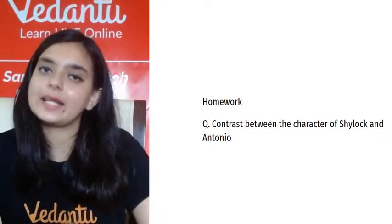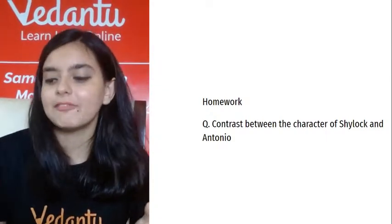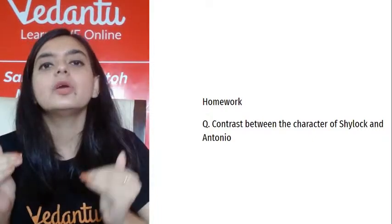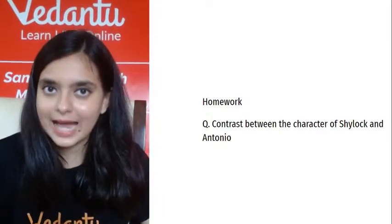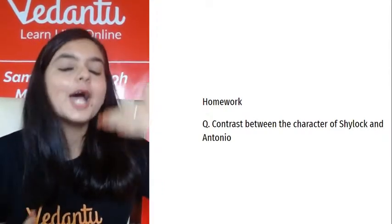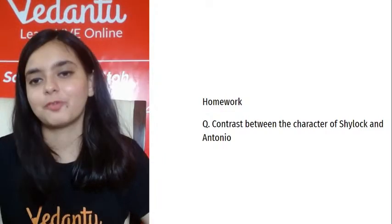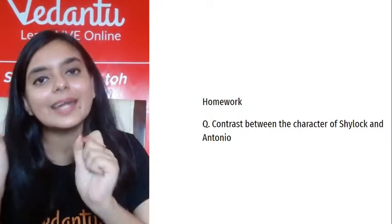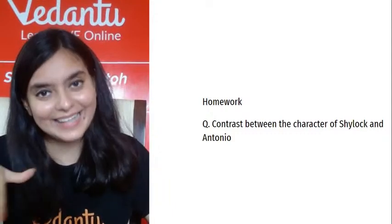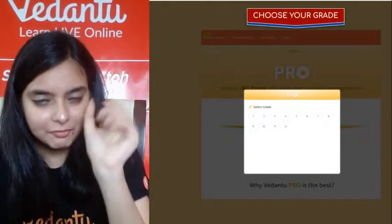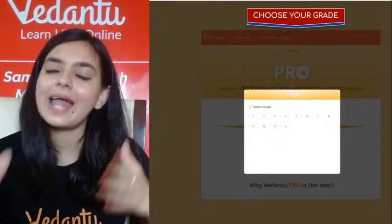The homework question is: contrast the characters of Shylock and Antonio. Whatever we have learned about both characters so far shows that Shylock and Antonio are used as foil characters in the play. I explained what a foil character is in the very first session — if you're unclear, go back to that video. Please put your comments in the comment section.